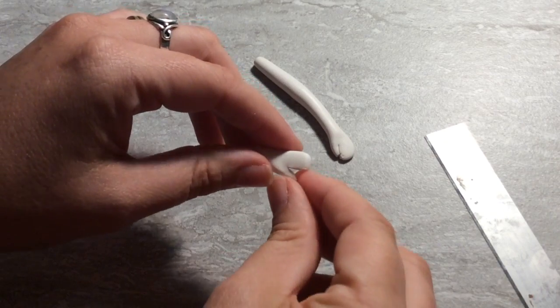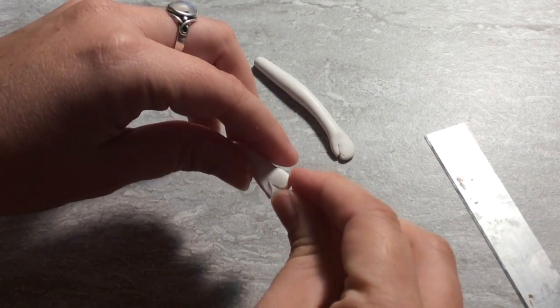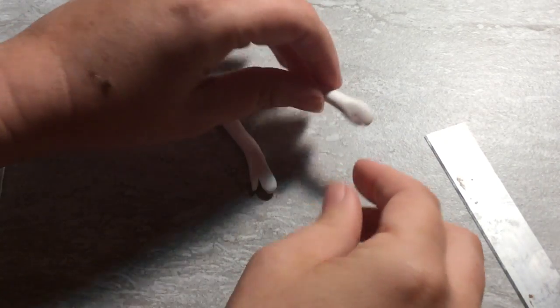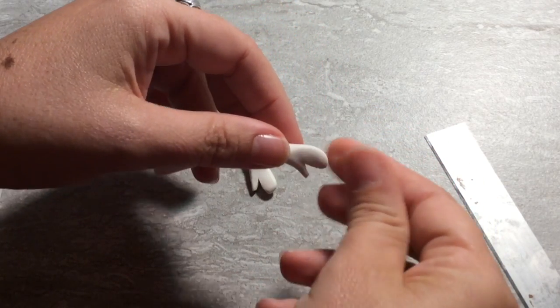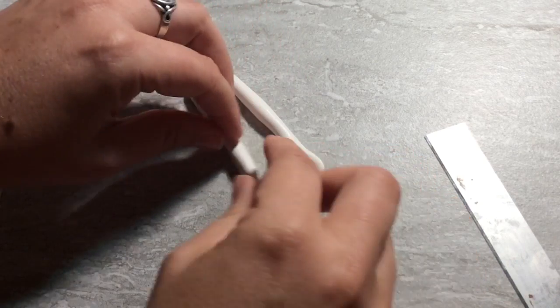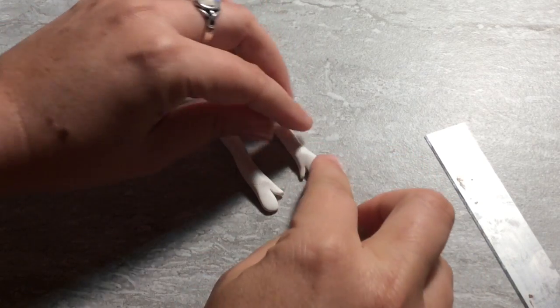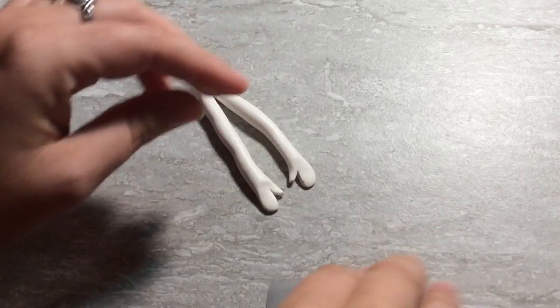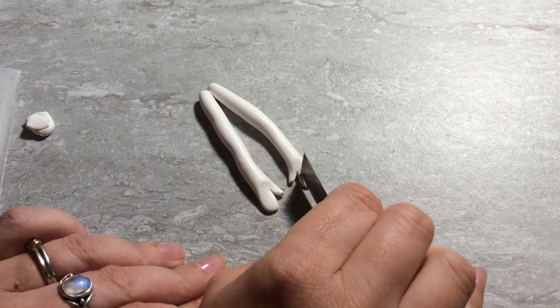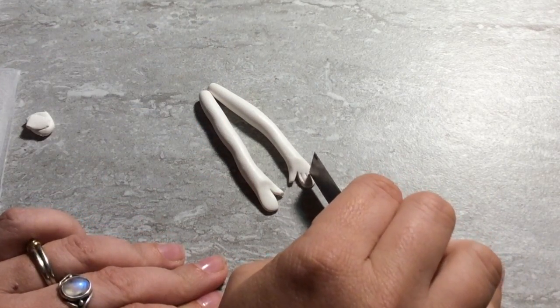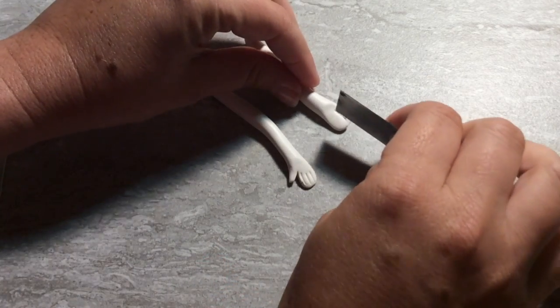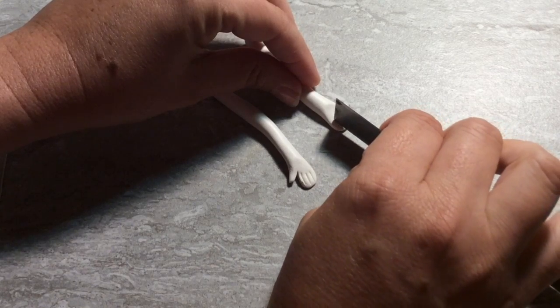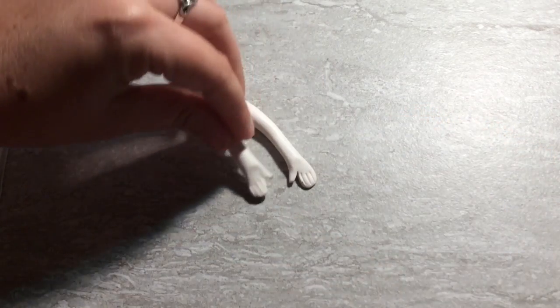I'm not going to make them highly detailed hands because the rest of the doll itself is not highly detailed. But we can make a sort of start with a little mitten hand by pulling on the thumb and the fingers and then you can use the back side of your blade to just press in the fingers. Just make it look like that.